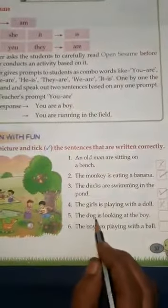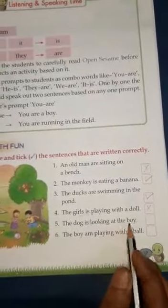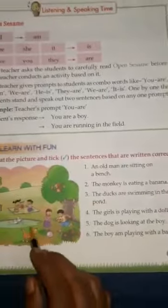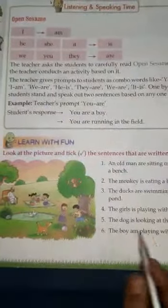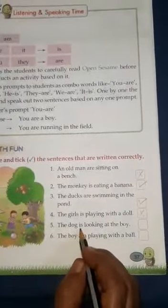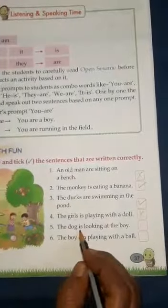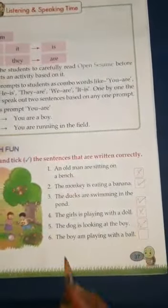Number five: The dog is looking at the boy. The dog is a singular naming word and 'is' is used, so it is a correct sentence.